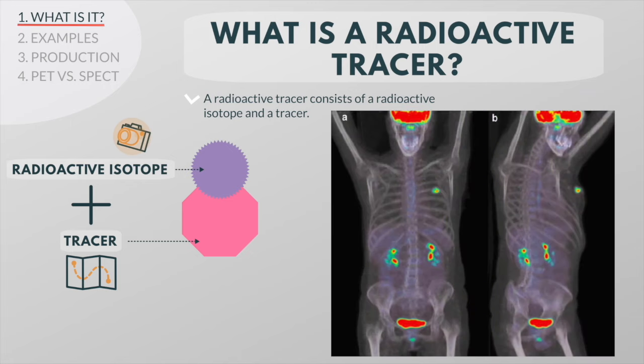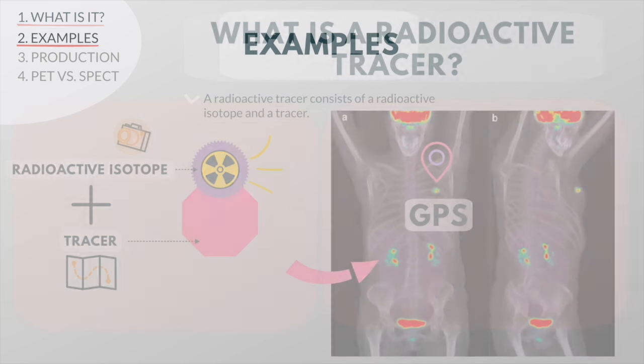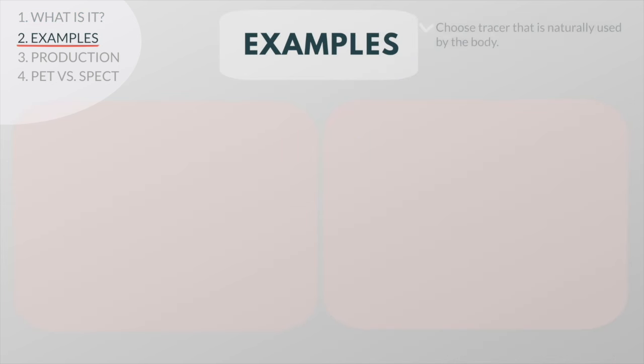Radioactive tracers emit radiation which functions like a GPS tag, allowing doctors to track not only where in the body the atom goes, but also how it behaves. We usually choose tracers that are naturally used by the particular organ or tissue during its metabolic process.